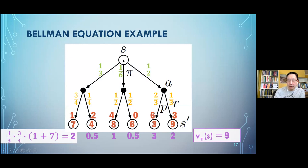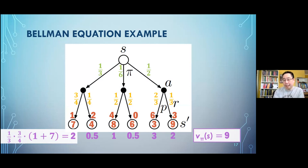The key thing we're about to get to is we're using a recursive formulation: if we know the value of our successor states, we can calculate the value of our current state. What we're going to get into next is: if we can estimate the value of our successor states, then we can estimate the value of our current state. And if you can estimate the value of any of the states, then you can estimate the value of all the states. That's where the next session is going.